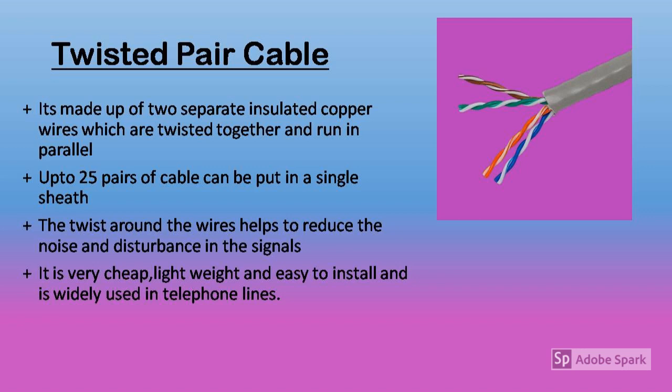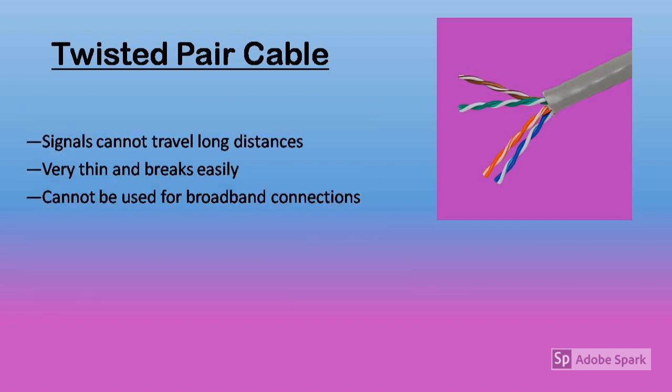Twisted pair cable comprises two separate insulated copper wires twisted together to form a single medium, and it is widely used in telephone lines. The twist is helical, like a DNA shape, and up to 25 pairs of cables can be put in a single sheath. All transmission media are prone to noise interference and cross-talks, so the twist between the wires reduces cross-talk and noise. It is also cheap, lightweight, and easy to install.